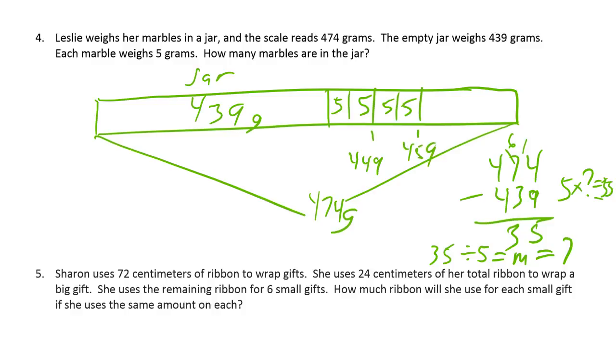Have to get to 474. Another 2 fives, that's another 10. 469. And now you can see 2 more fives gets 479. That would be too much. So, we just need one more five. 469 plus 5 is 474. And then you can just count the fives. 1, 2, 3, 4, 5, 6, 7. And that's a way to use your tape diagram to solve it.